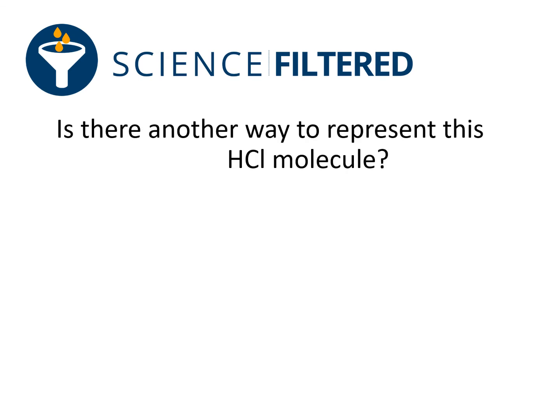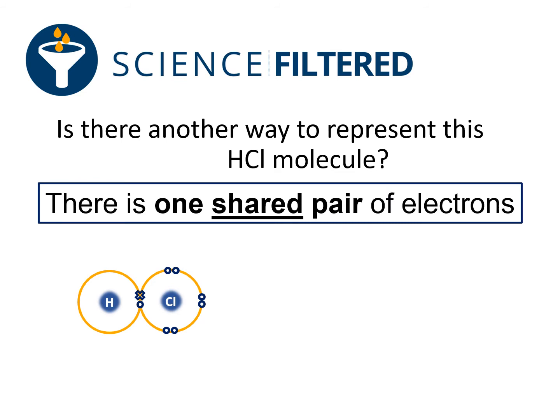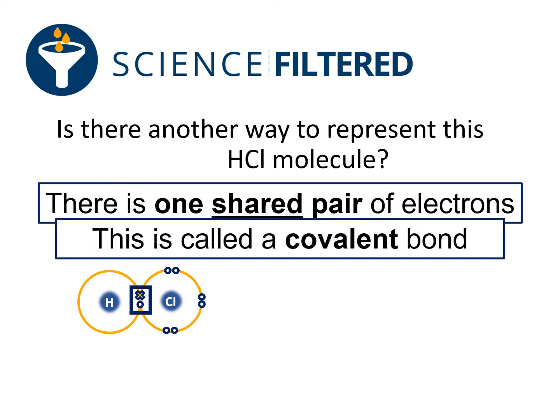There is another way to represent this hydrogen chloride molecule. You've got one hydrogen, one chlorine, and there is a shared pair of electrons between them, as you can see in the box here. That is called a covalent bond.